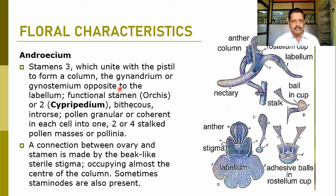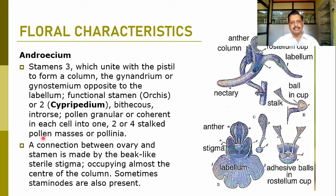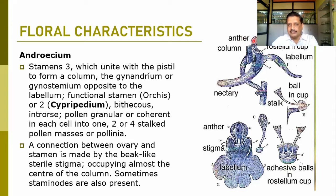The functional stamens may be two, as in Orchis or Cypripedium, where two fertile stamens are found. They are normally dithecous and introrse. Pollen grains are granular or coherent in each cell into one, two, or four stalked pollen masses called pollinia. The connection between ovary and stamen is made by a beak-like sterile stigma occupying most of the center of the column. These are the pollinia structures — the pollen masses. The rostellum cup is shown here, and the labellum is where the insect can easily sit.